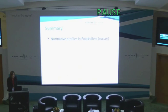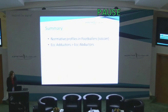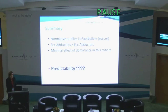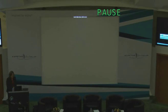In summary, I've presented normative profiles for the footballers in our cohort here in Qatar. We found the eccentric adductors to be stronger than the eccentric abductors, and there was a minimal effect of dominance in this cohort, which is also an interesting finding. In terms of the predictability of any of these tests, I look forward to presenting that data to you once we've analysed our prospective study. Thank you.